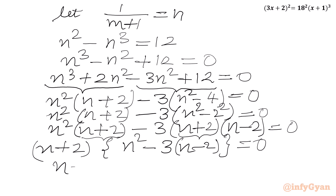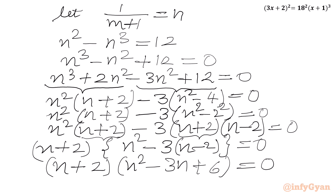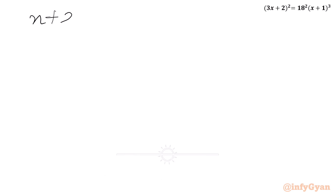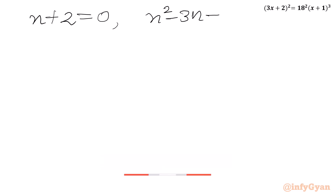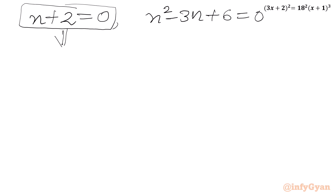So from here I can write two equations. Either n + 2 = 0, giving n = -2, or the quadratic n² - 3n + 6 = 0. From the first equation, n must be equal to -2.